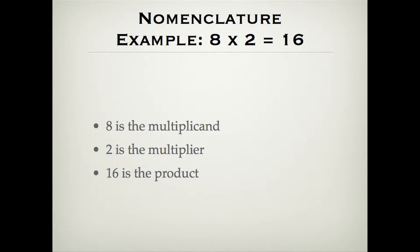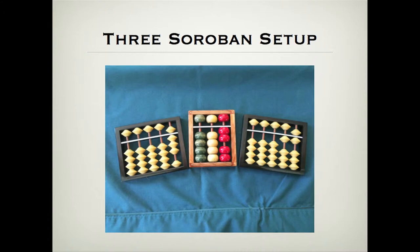We're going to set these up on the Soroban. It's easiest to start with three different Sorobans — one for the multiplier. Here's eight times two equals sixteen: here's the multiplier two, here is the multiplicand eight, and over here is the product sixteen.